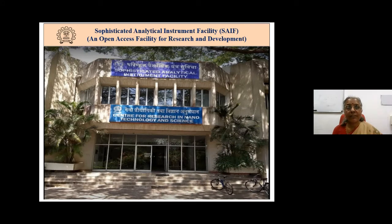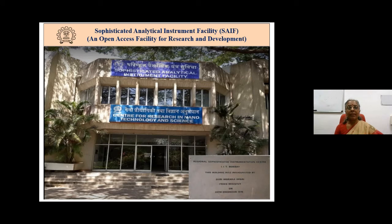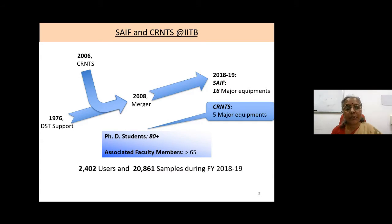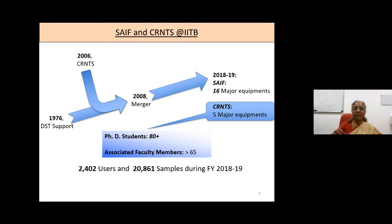That is SAIF — Sophisticated Analytical Instruments Facility. SAIF is part of a bigger centre known as CRNTS, the Centre for Research in Nanotechnology and Science. This is the front entrance of our building. SAIF was inaugurated in 1978, and towards 2008, SAIF was merged with CRNTS. SAIF is fully supported by DST, the Department of Science and Technology. We have around 16 major facilities in SAIF and another five major instruments in CRNTS, totalling about 21.